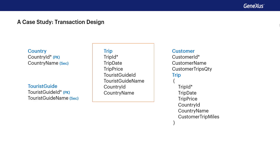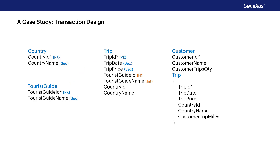Let's take a look at the trip transaction. It has TripID as a primary attribute, and TripDate and TripPrice as secondary attributes. TouristGuideID is the foreign key in this transaction, and TouristGuideName is inferred from that value. There is a one-to-n relationship between tourist guide and trip. Something similar happens with the CountryID attribute, which is a foreign key here, and CountryName, which is inferred from that value. There is also a one-to-n relationship between country and trip.